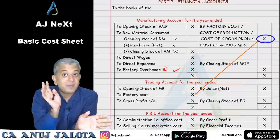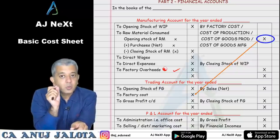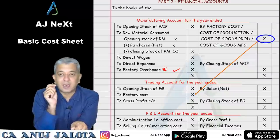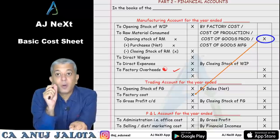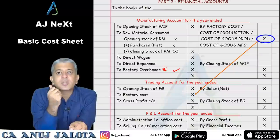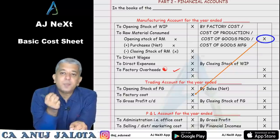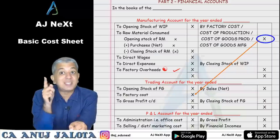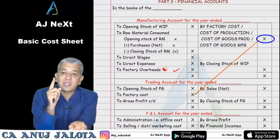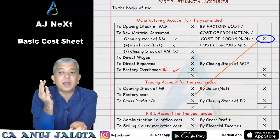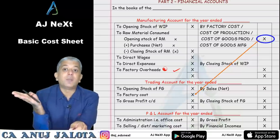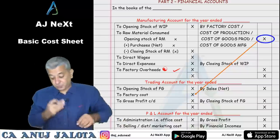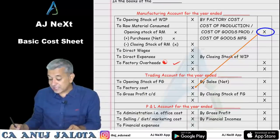So: raw material stock is valued at cost — meaning purchase cost. WIP stock is valued at cost — meaning direct material, direct labor, direct expenses, and factory overheads (excluding that particular item). Finished goods stock is valued at cost — meaning five types of costs: direct material, direct labor, direct expenses, factory overheads (excluding), and then administration overheads related to production. This was cost sheet valuation.